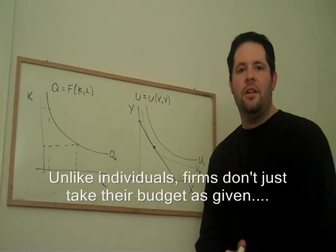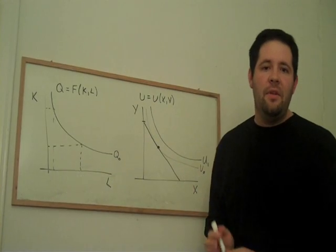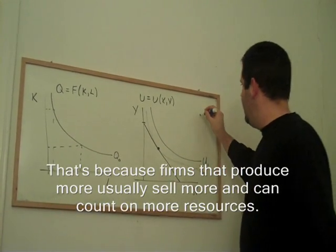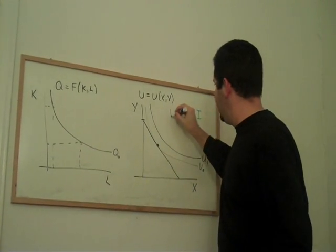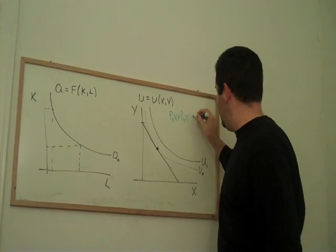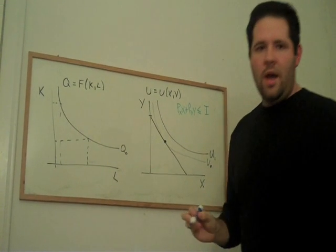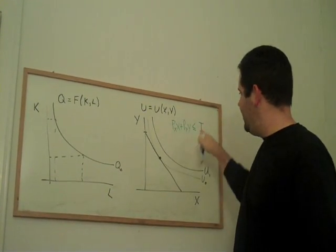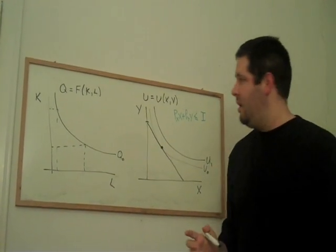Well, it turns out that firms aren't constrained in the same way as individuals are. If you go over here, we have a budget constraint. And we're saying, if you're an individual, you spend all of your money on X and Y, you have to spend less than what you have.